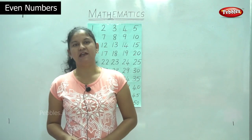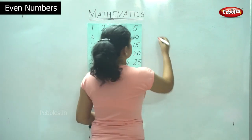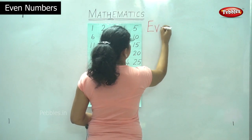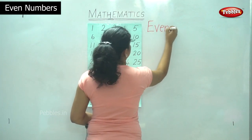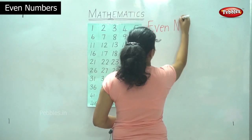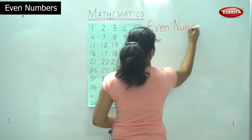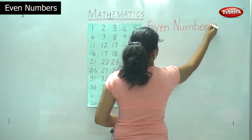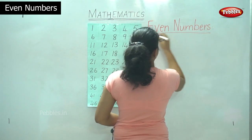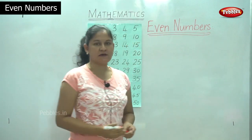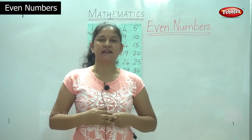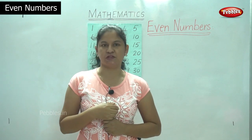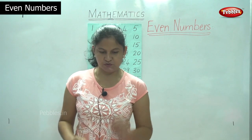Our next topic will be even numbers. Even numbers are nothing but numbers that are divisible by two, that is, they can be divided into two.